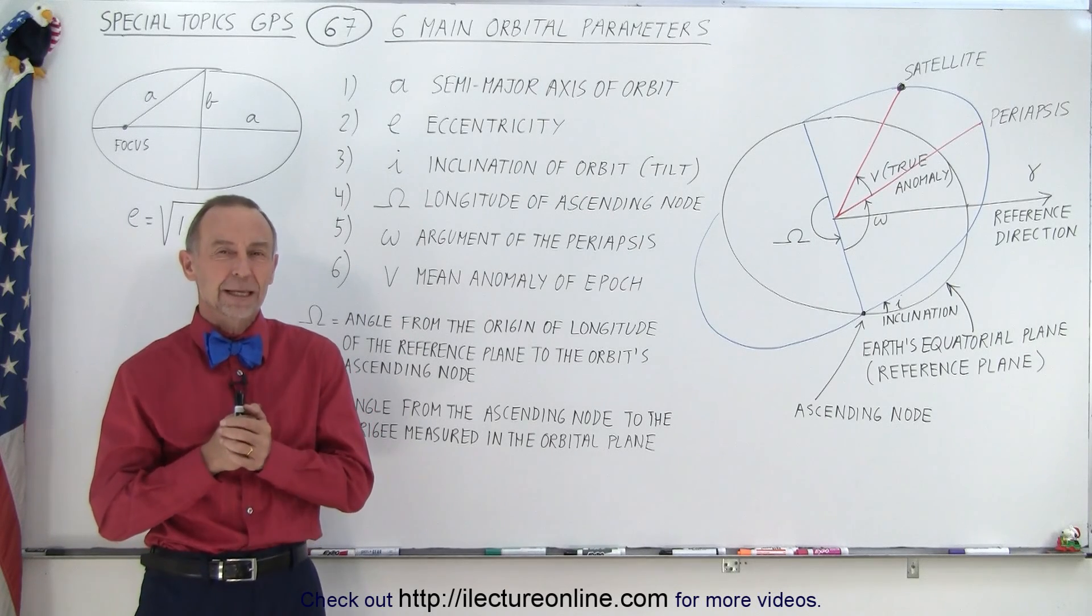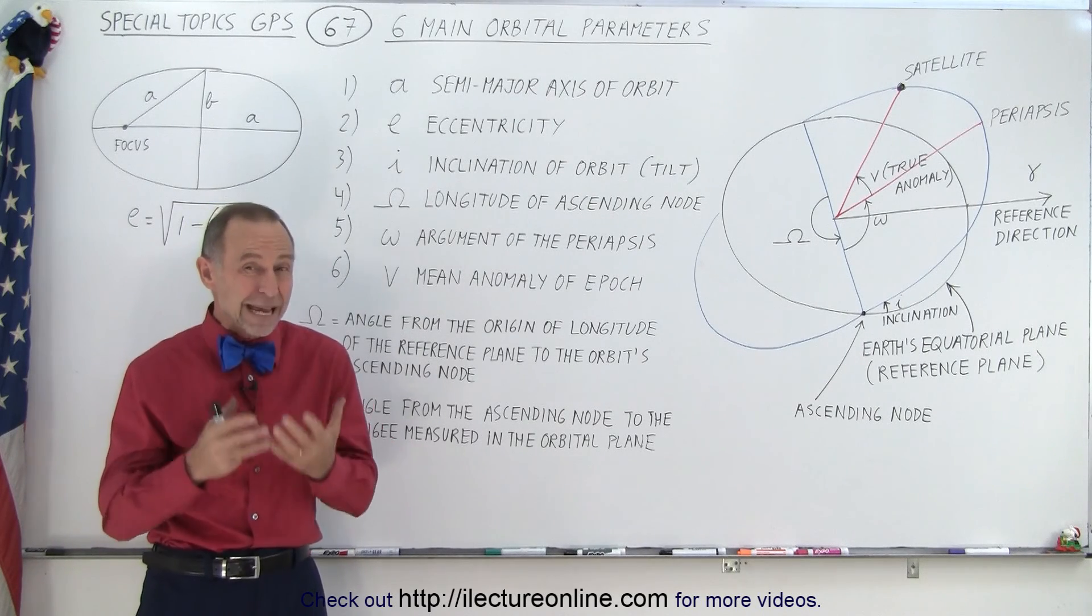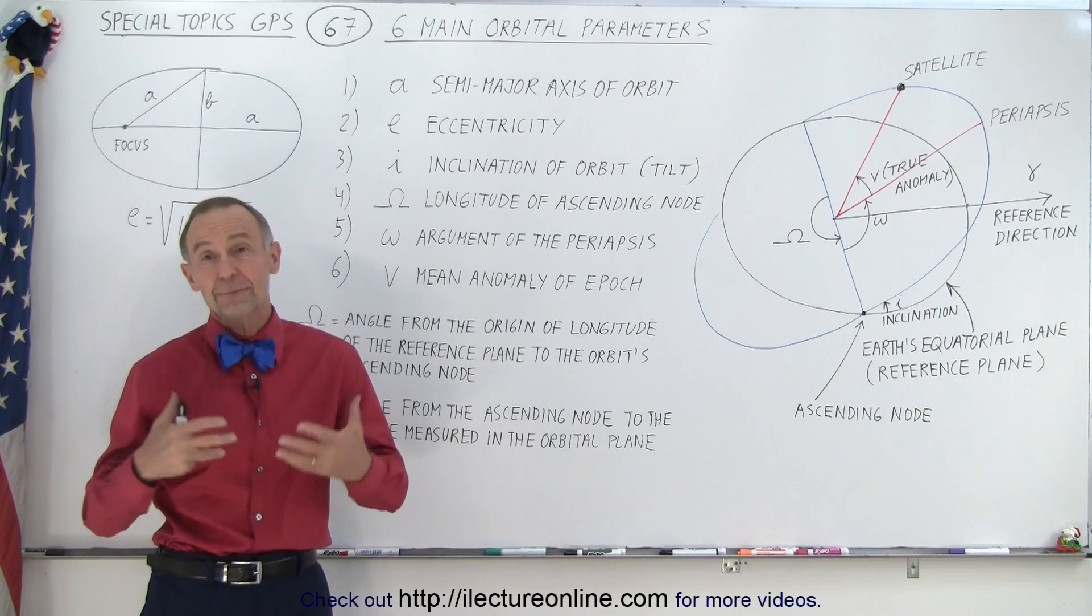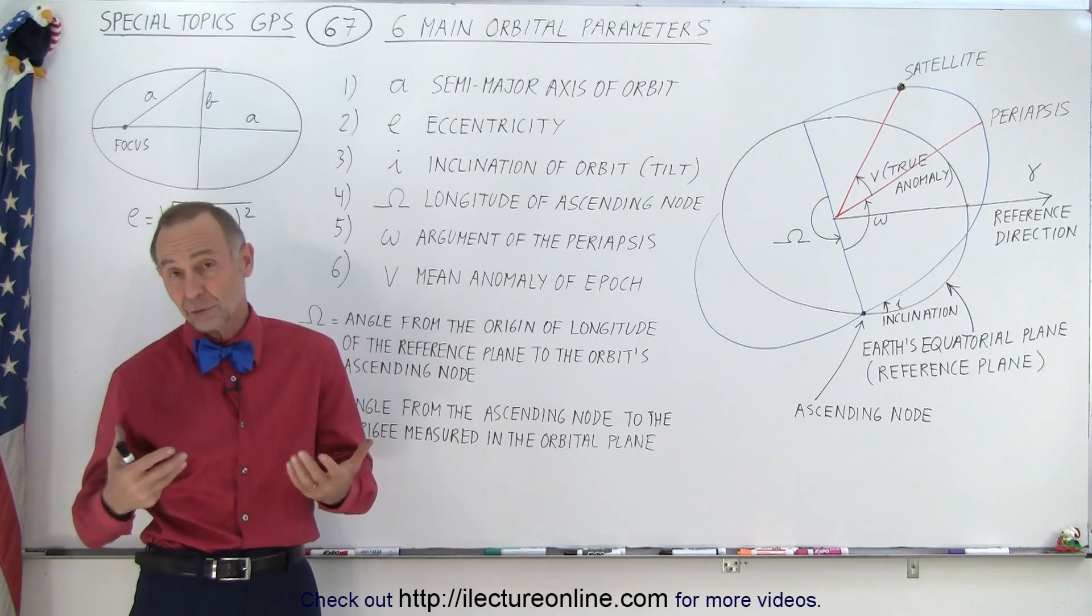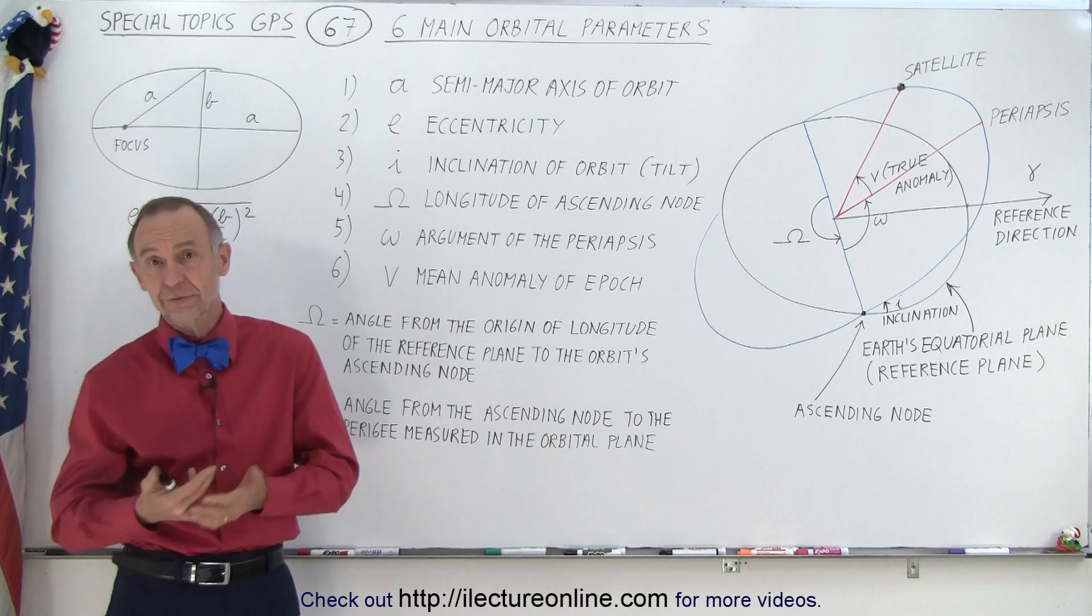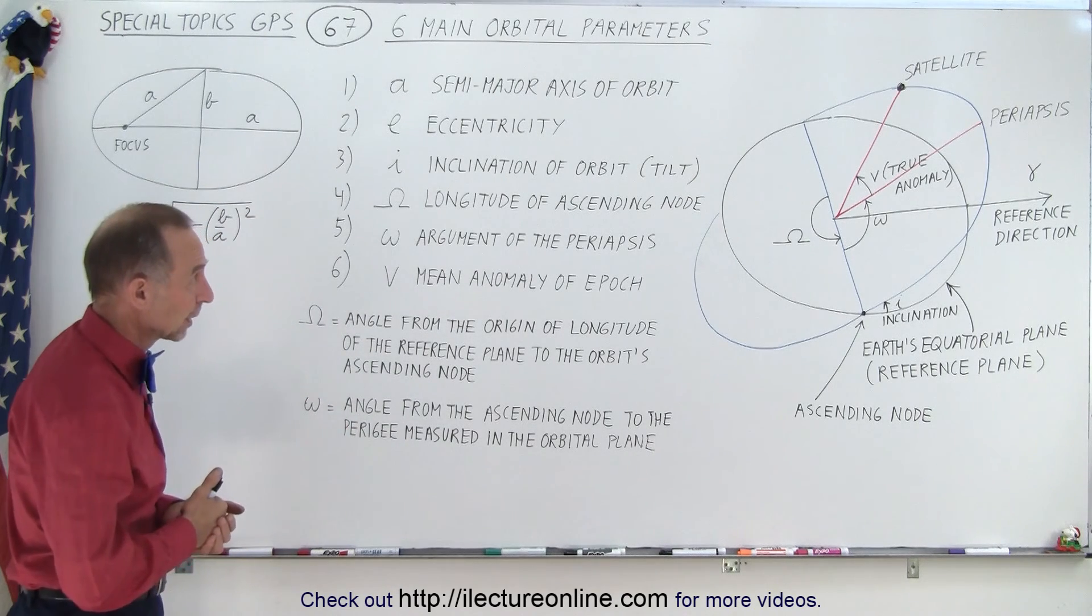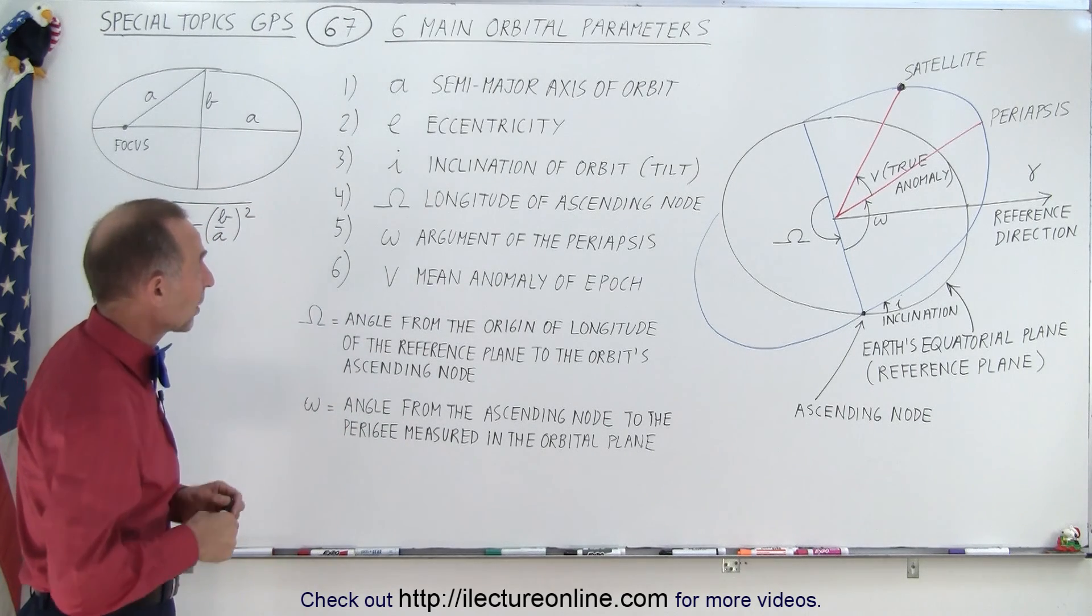Welcome to iLectureOnline. Here we're going to talk about the six main orbital parameters that are very important when we talk about GPS or any satellite circumventing the Earth or revolving around the Earth. So what are those six parameters?